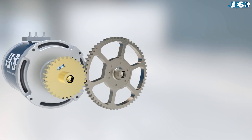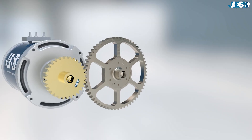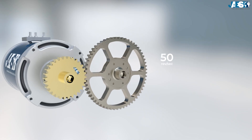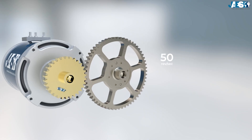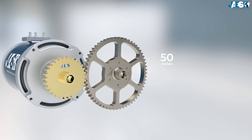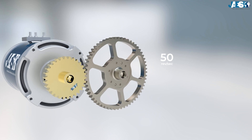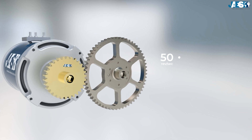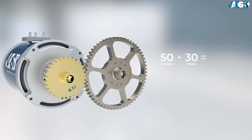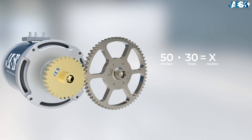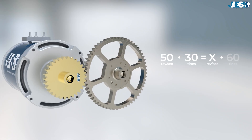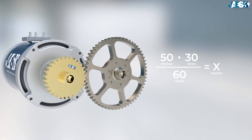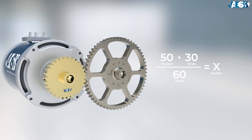Now let's try to calculate the speed of the driven gear, knowing that the drive gear has a speed of 50 revolutions per second given by the electric motor. Through simple math, we can perform this equation: the speed of the drive gear times the number of drive gear tines equals the speed of the driven gear times the number of driven gear tines. As a result, the speed of the driven gear has been reduced to 25 revolutions per second.